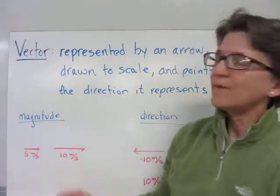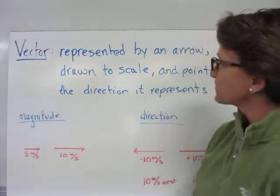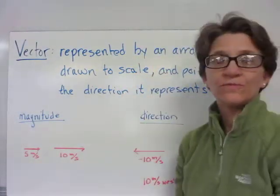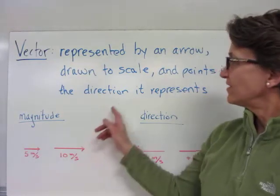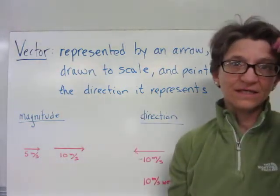With vectors, we can represent them by an arrow, and that arrow should be drawn to scale, and the direction represents its quantity.